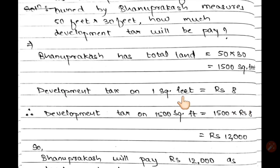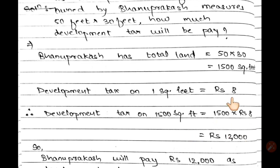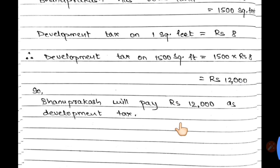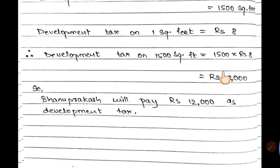Development tax for 1 square foot is Rs.8. So for 1,500 square feet: 1500 × 8 = Rs.12,000. Bhanuprakash will have to pay Rs.12,000 as development tax.